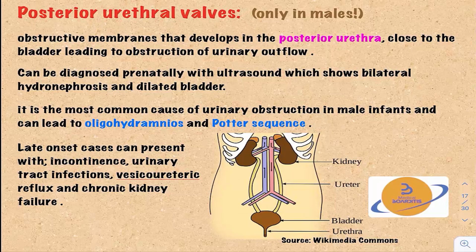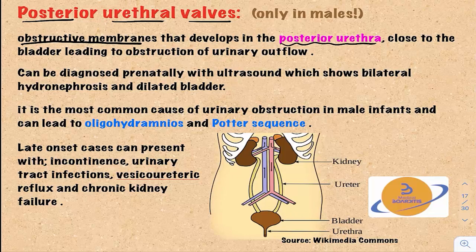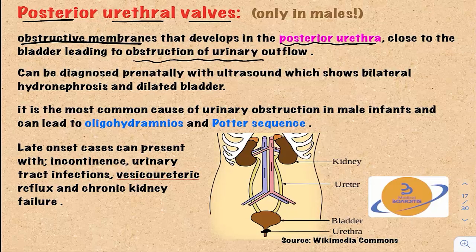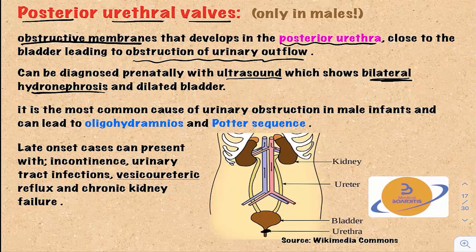Next is something called posterior urethral valves. These are obstructive membranes that develop in the posterior urethra — the urethra that is very close to the bladder. This will lead to obstruction of the urinary outflow. This can be diagnosed prenatally through ultrasound, which will show bilateral hydronephrosis. Hydronephrosis means the enlargement of the kidney because of fluid accumulation.